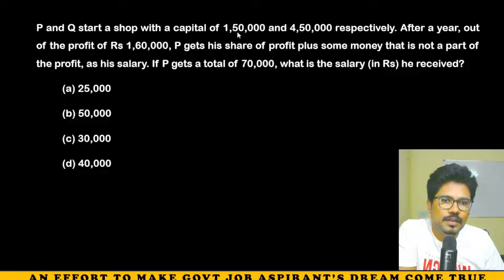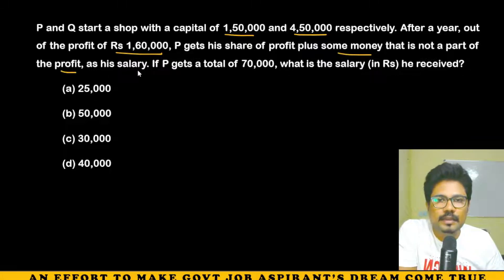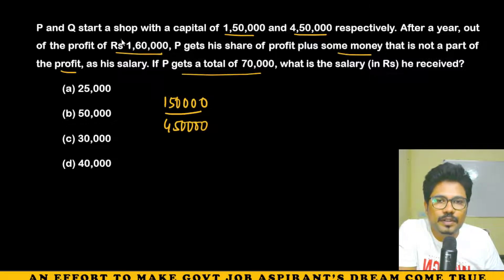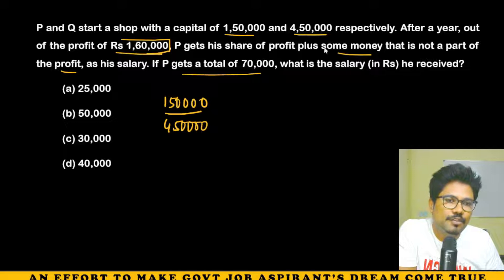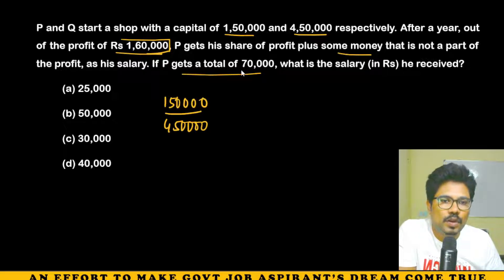Next question: P and Q start a shop with capital of 1,50,000 and 4,50,000 respectively. After a year, out of a total profit of 1,60,000, P gets his share of profit plus an additional salary amount not part of the profit. If P gets a total of 70,000, what is the salary he received?